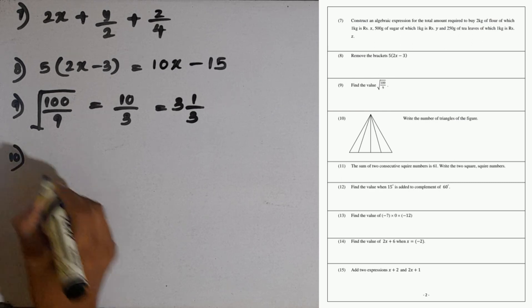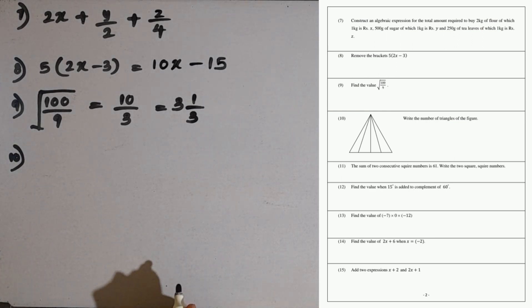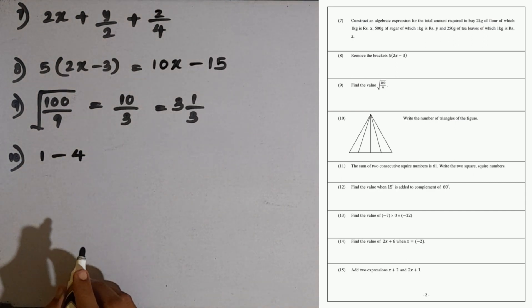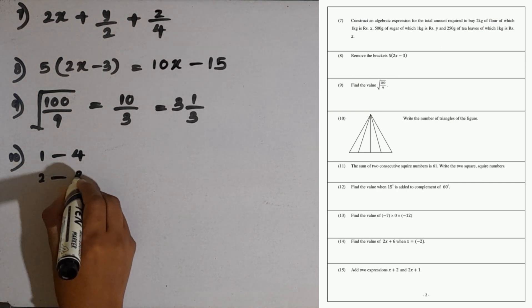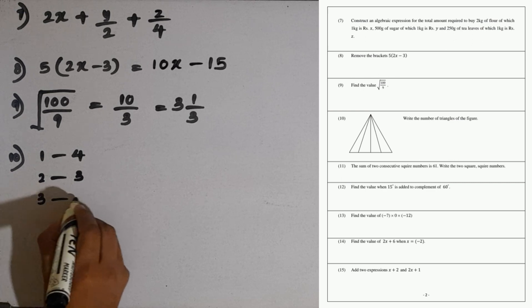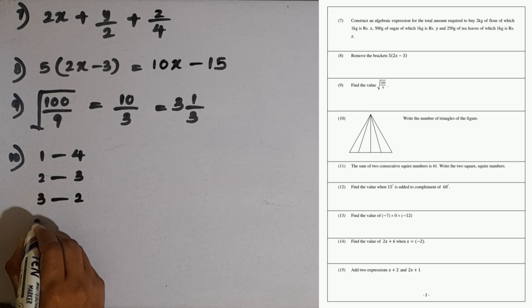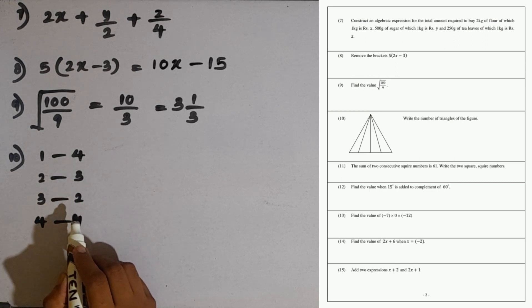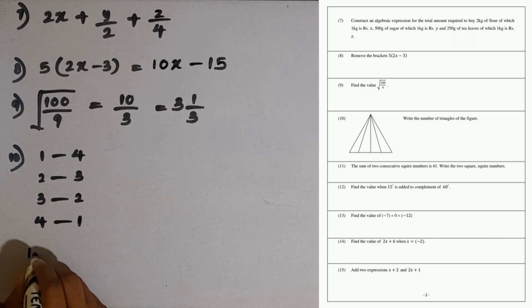Question number 10: write the number of triangles of the figure. Triangles with 1 smaller triangle is 4 here. Then triangles with 2 smaller triangles is 3. Triangles with 3 smaller triangles is 2. With 4 smaller triangles is 1. So the addition is 4 plus 3 plus 2 plus 1. What is the addition? 10. So 10 triangles are there.